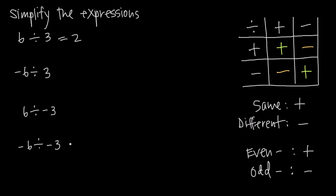If we go down to our last example and take negative 6 divided by negative 3, we have a negative by a negative. That's going to give us a positive. That should make sense because our signs are the same, so we know our result is positive. So again, we're going to get a positive 2.